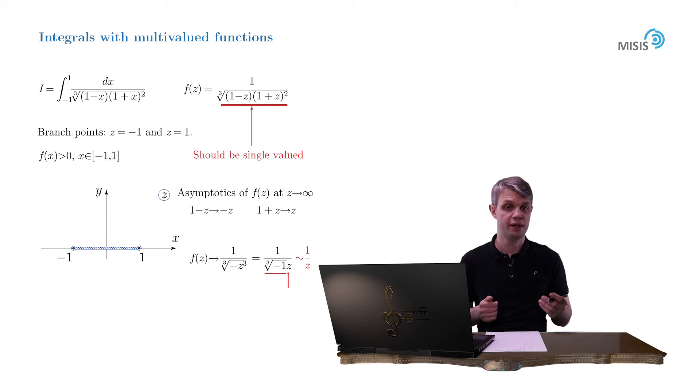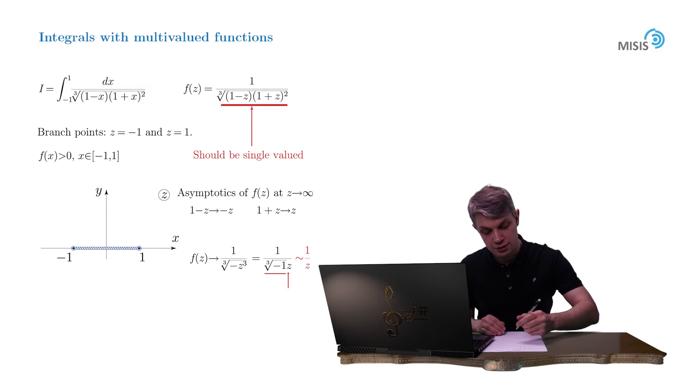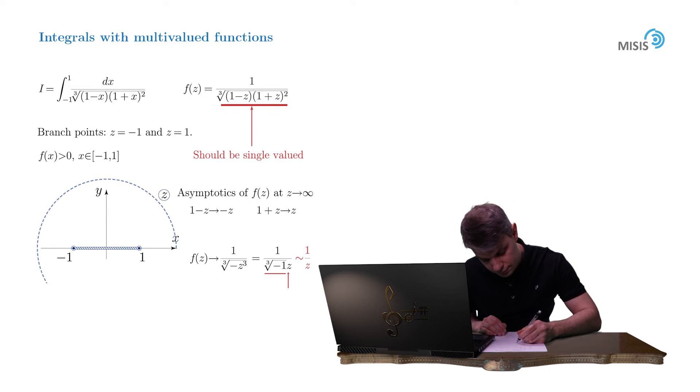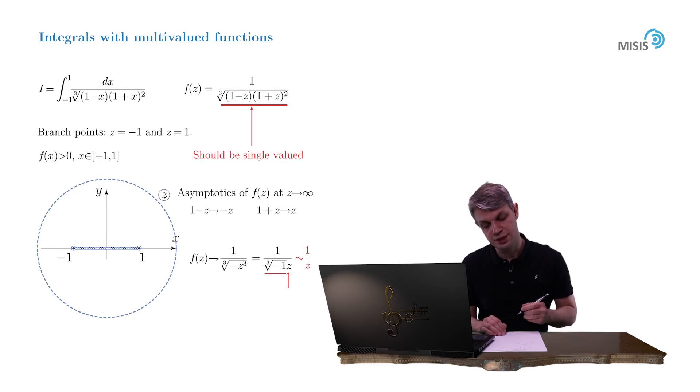But there is another, I would say, more didactic way to check if the function remains single-valued. Let's briefly cover it. As we mentioned earlier, the only allowed rotation in the complex plane is the one around the branch cut. So let's draw some circle around the branch cut and trace the changes of the arguments of the constituents of our multivalued function.